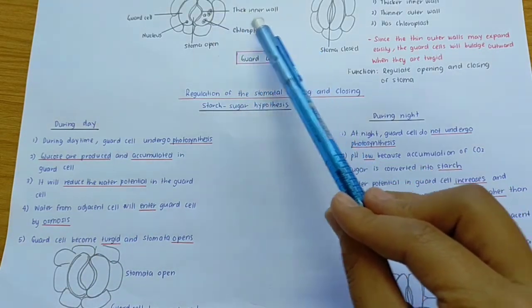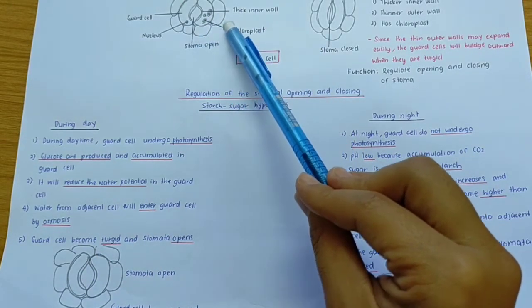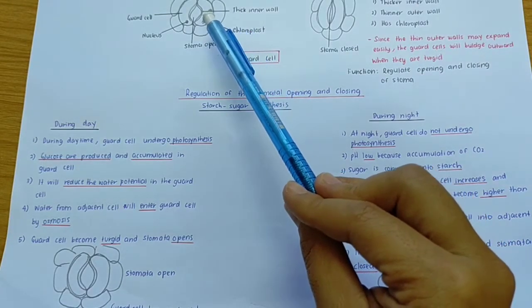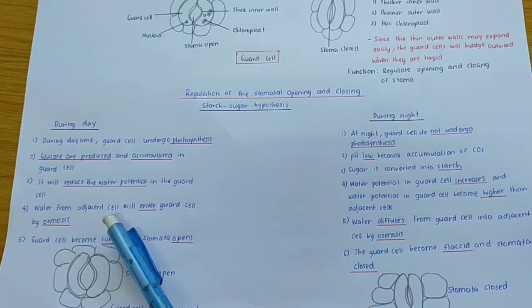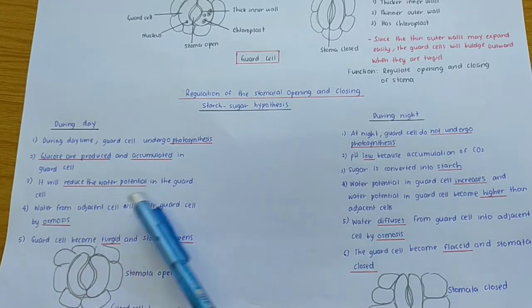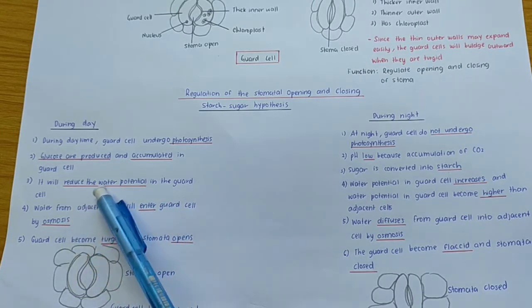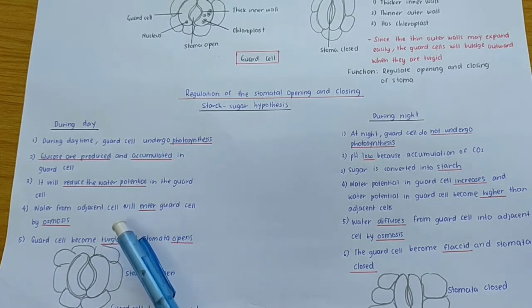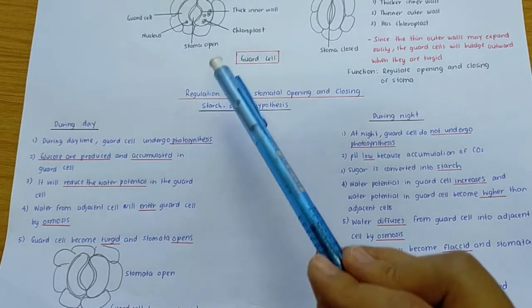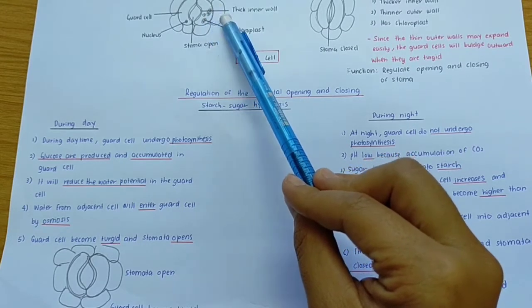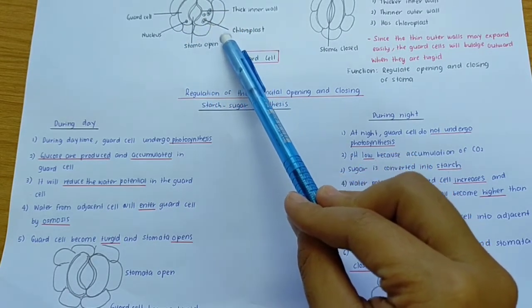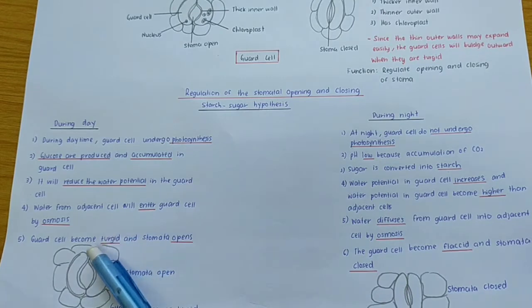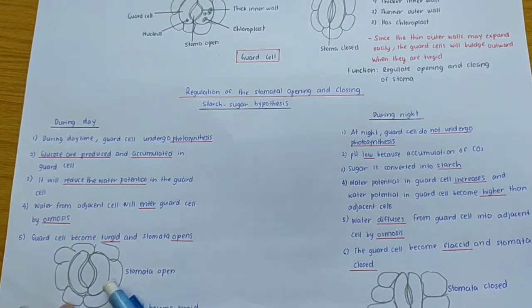Since the water potential in the guard cell is reduced, the cell beside the guard cell — called the adjacent cell — has a higher water potential than the guard cell. Therefore, water from the adjacent cell will enter the guard cell by osmosis. This follows the concept of osmosis: the movement of water molecules from high water potential to low water potential.